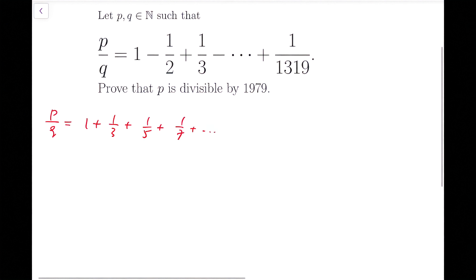Summing all the odd terms first, up to 1 over 1319, minus all the even terms, up to 1 over 1318.